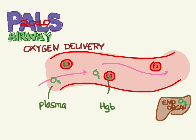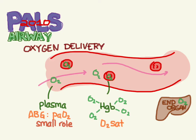Oxygen is carried in two ways: dissolved in the plasma and carried by hemoglobin. Plasma dissolved oxygen is measured on your ABG, and the hemoglobin bound oxygen is measured by your pulse oximetry, your oxygen saturation.